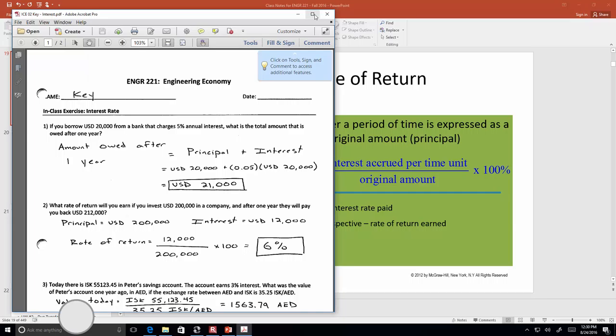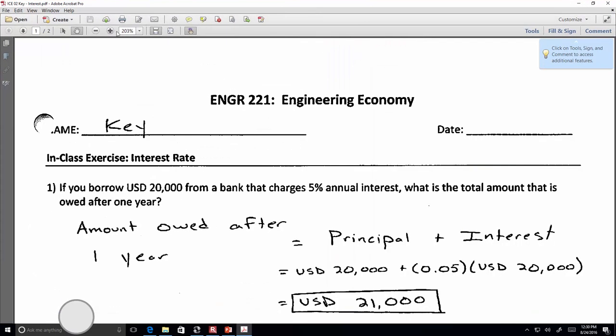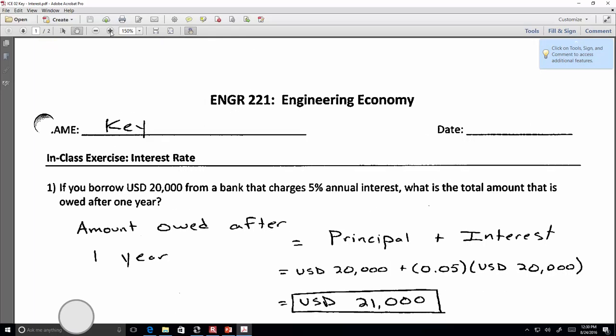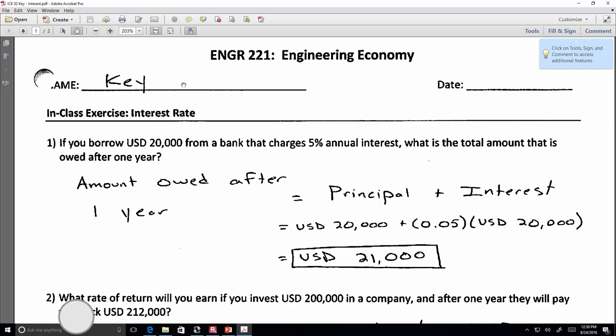All right. Let's take a quick look at the solution to the first three just so that we can all stay on the same page if there are some questions. Okay. So the first one, you borrow $20,000 from a bank that charges 5%. What's the total amount that is owed after a year? So we say the total amount is going to be the principal plus the interest that's due. So you'll owe $20,000 plus 5% of $20,000. So the principal amount, the interest amount, add it together, it's $21,000. All right. That's the final accumulated amount. Any questions from the first one?